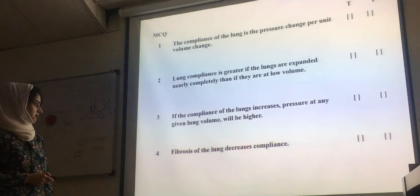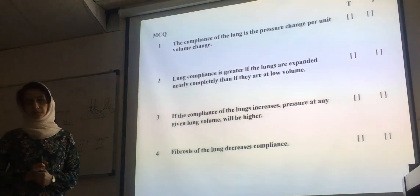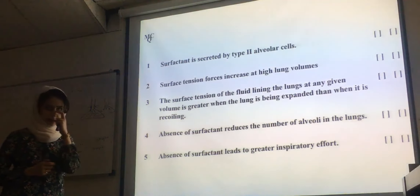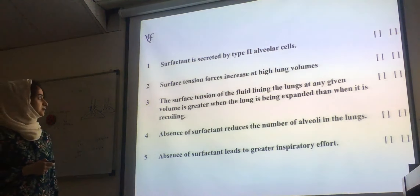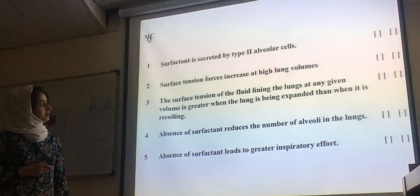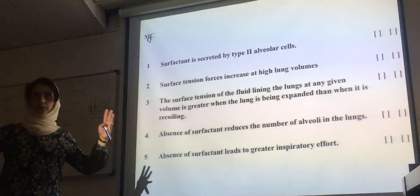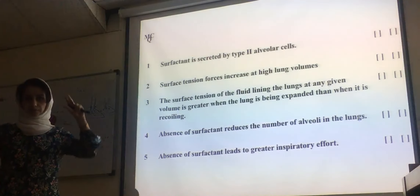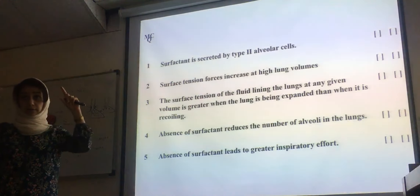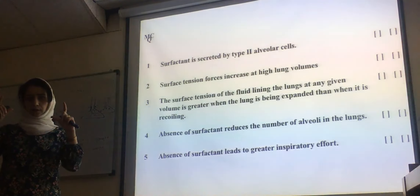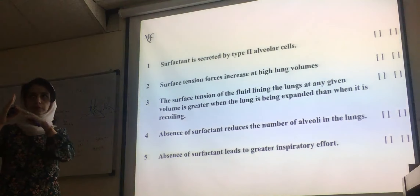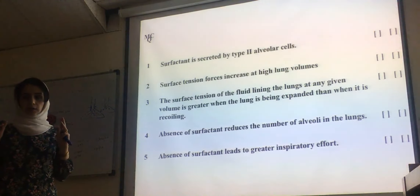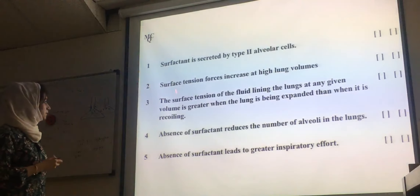Fourth: fibrosis of the lung decreases compliance. True. Fifth: surfactant is created by type 2 alveolar cells. True. Sixth: surface tension force increases at high lung volume. True — at high lung volume, alveolar cells stretch, surfactant molecules move farther apart, the fluid lining is more exposed, and surface tension increases.